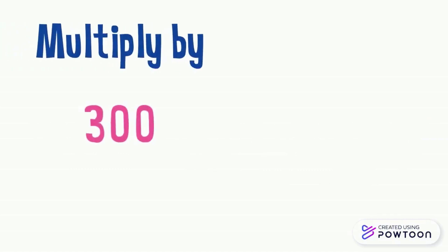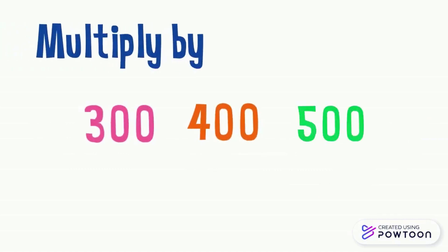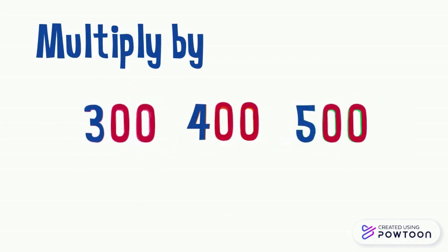To multiply a number by 300, 400, or 500, we apply the same method. First, we multiply the number by 3, 4, or 5. Then we put two 0s to the right of this number.